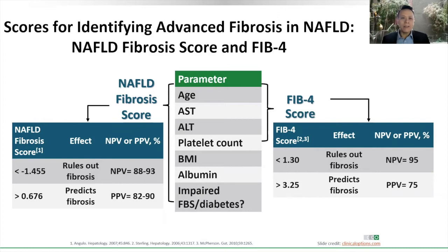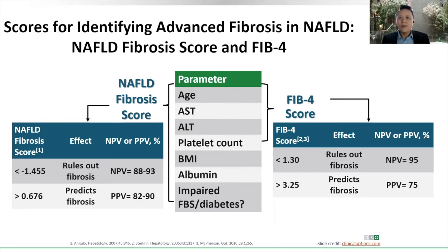There are also lab tests that suggest cirrhosis: low albumin reflects poor synthetic function; abnormal prothrombin time; abnormal bilirubin reflects poor excretory function; and low platelet count reflects poor synthetic function because thrombopoietin is produced by the liver. There are also non-invasive fibrosis scores you can use right in your clinic — the FIB-4 score and the NAFLD Fibrosis Score, both requiring only routine labs.